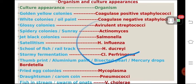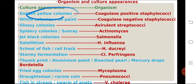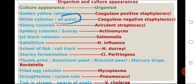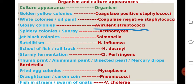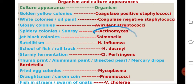Coagulase-positive Staphylococcus shows golden yellow colonies. Coagulase-negative Staphylococcus shows white or oil-paint colonies. Glossy colonies for avirulent streptococci, and a spidery or sunray — a very beautiful appearance — by Actinomyces. Salmonella shows a typical jet black colony.